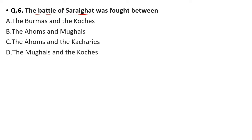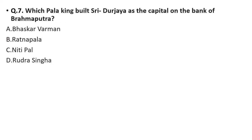Question 6: The Battle of Saraighat was fought between whom? This is one of the favorite questions of examiners. Options: Burmese and Koch, Ahom and Mughals, Ahom and Kachari, or Mughals and Koch. The correct answer is option B — the Ahom and the Mughals.